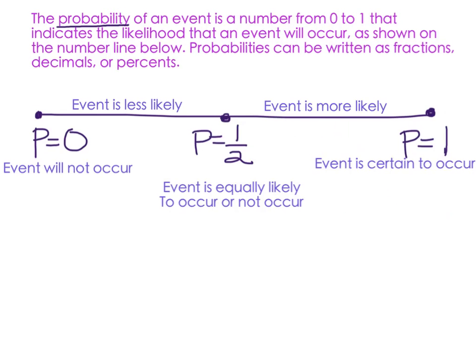The probability of an event is a number from 0 to 1 that indicates the likelihood that an event will occur. As shown on the number line below, if the probability is 0, then the event's not going to occur. If the probability is 1/2, the event is equally likely to occur or not occur, like a 50% chance of rain. And if your probability is 1, then the event is certain to occur. Probabilities can be written as fractions, decimals, or percents. So this could be given as 1/2, or 0.5, or a 50% chance. All of those are the same thing, and you can write it in any of the three ways that you prefer.